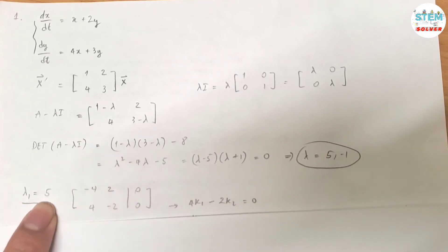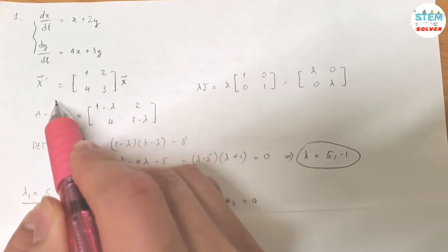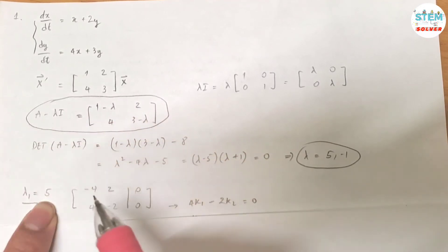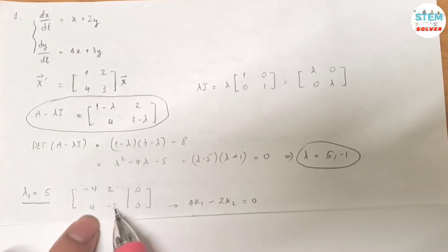Let's do it one by one. So first for lambda 1 equals 5, plug in 5 into here. That gives you this matrix: negative 4, 2, 4, negative 2. And then you augment it with 0.